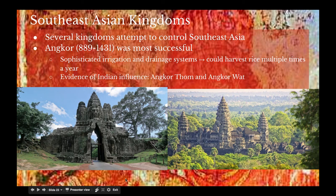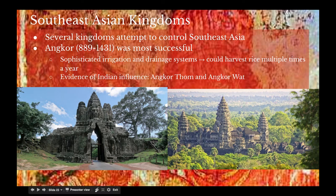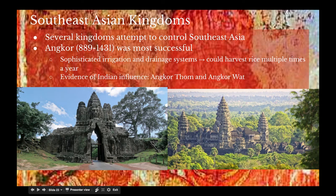The Angkor Thom complex covered about two square miles and was surrounded by a huge moat. Angkor Wat, probably the more famous of the two monuments, was constructed about a half a mile away from Angkor Thom and is a Buddhist temple complex. The Thais invaded in 1451 and the existing people were forced out, but the ruins of both Angkor Thom and Angkor Wat remain, showing the strength of these old kingdoms and the very strong influence of Indian culture over the area.